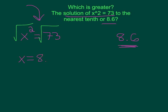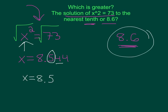The square root of 73 is about 8.544. Rounding to the nearest tenth, the 4 tells us to keep the 5, so x equals 8.5. Since 8.5 is smaller than 8.6, the greater number is 8.6. That concludes the full lesson on problem solving with square roots and cube roots — good luck!